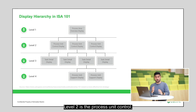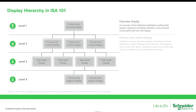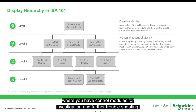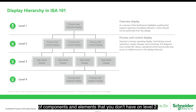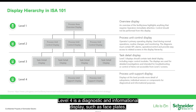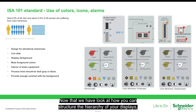Level two is the process unit control, where you display major task control and operation. Level three is a more detailed task display, where you have control modules for investigation and further troubleshooting of components and elements that you don't have on level two. Finally, level four is a diagnostic and operational display, such as face plates, where you provide more details of your components such as pumps and valves from the level three displays.